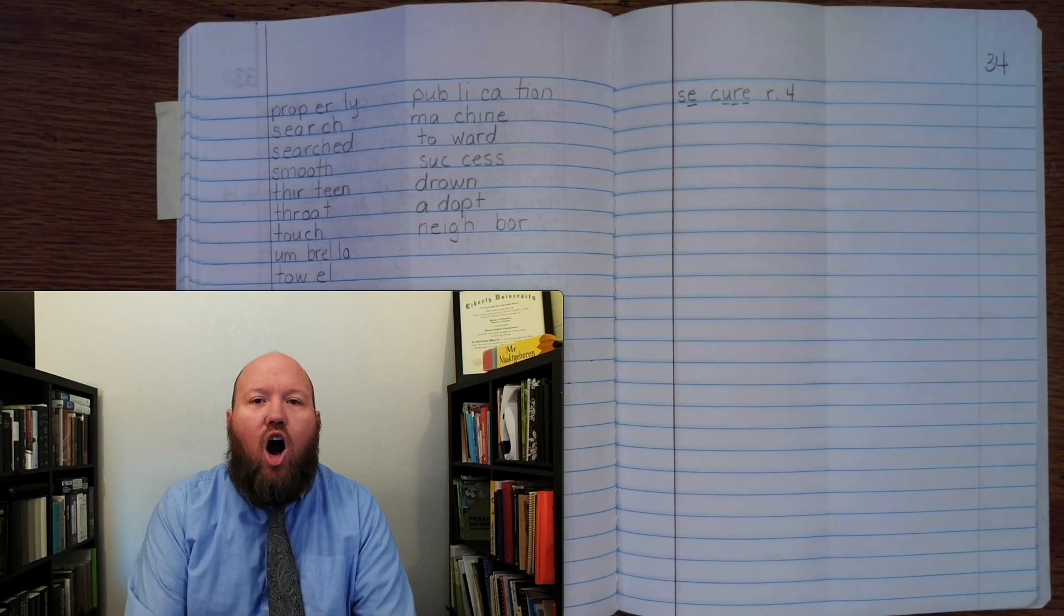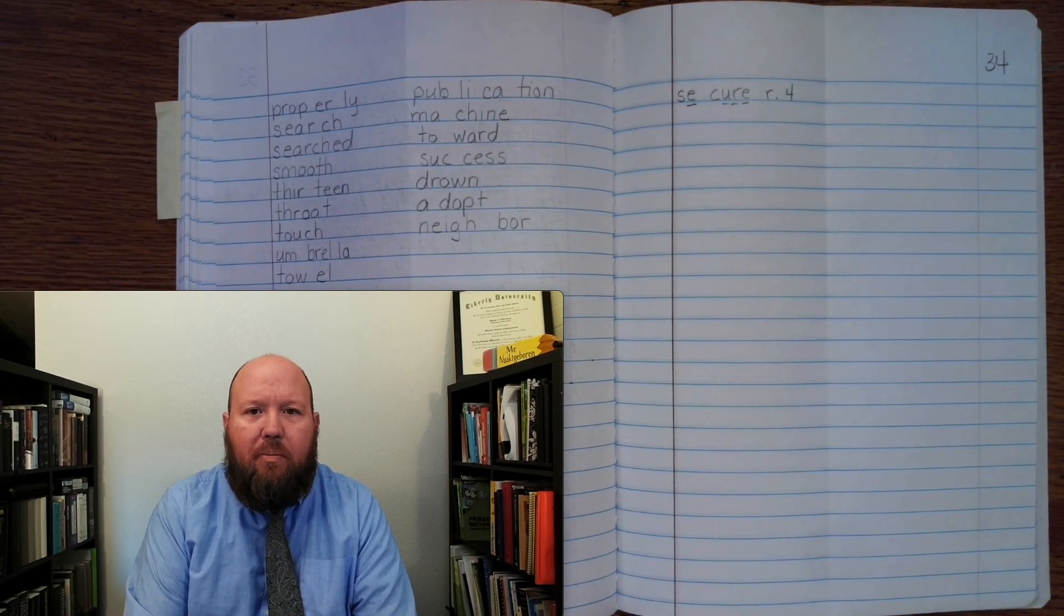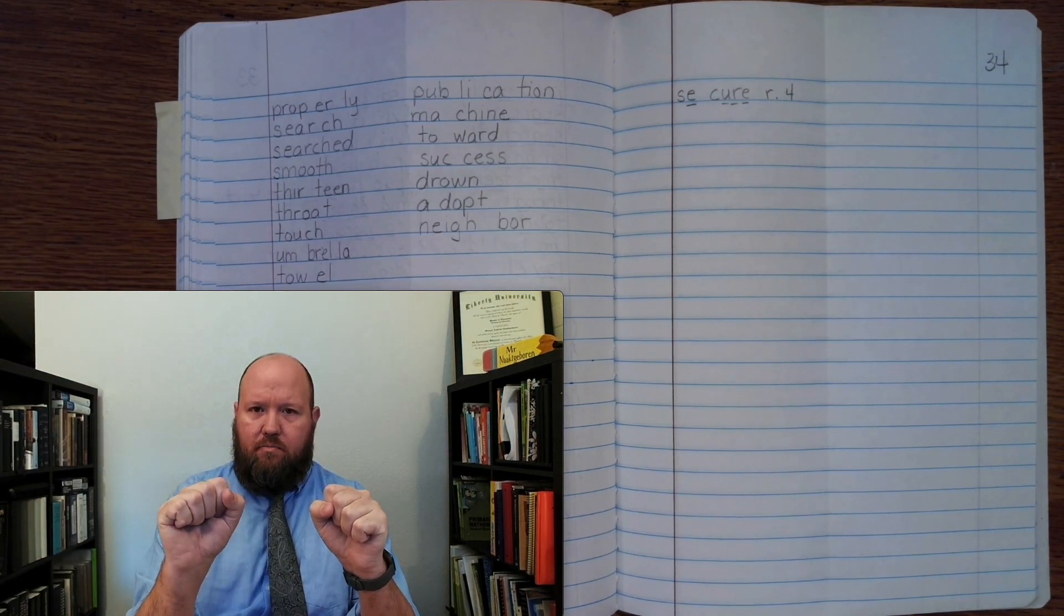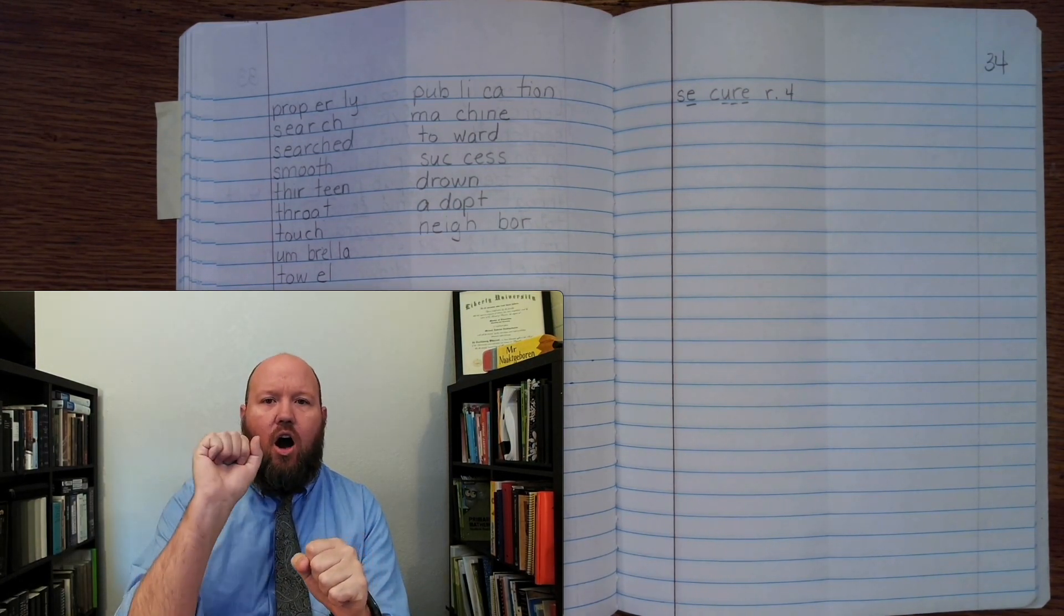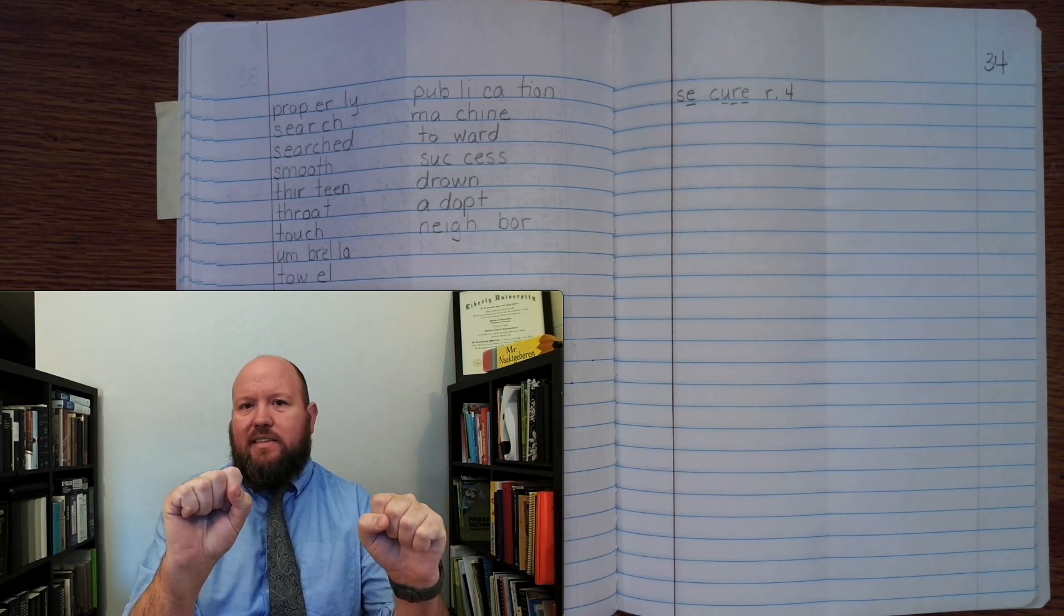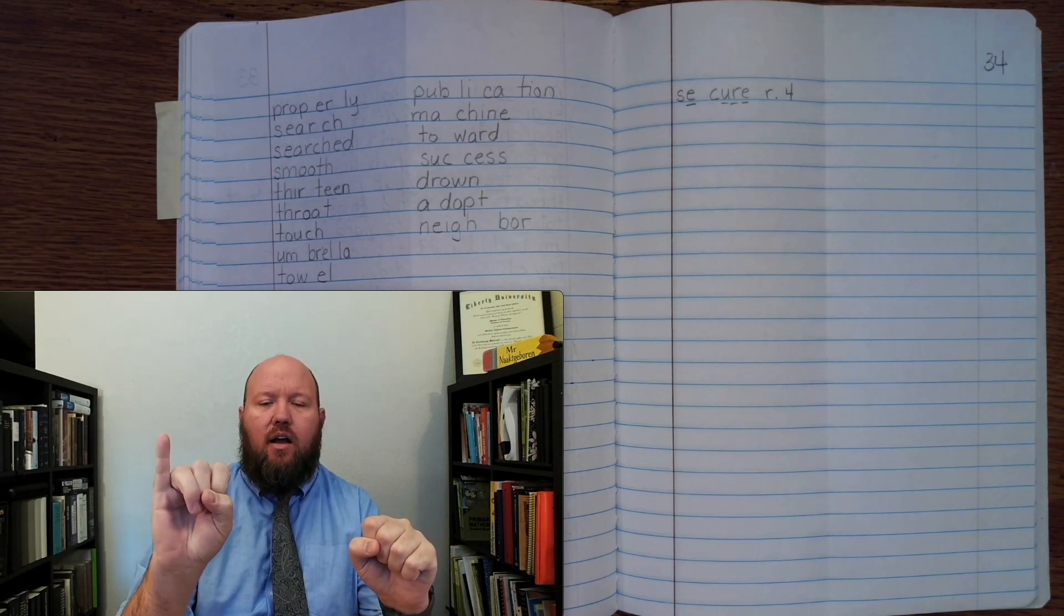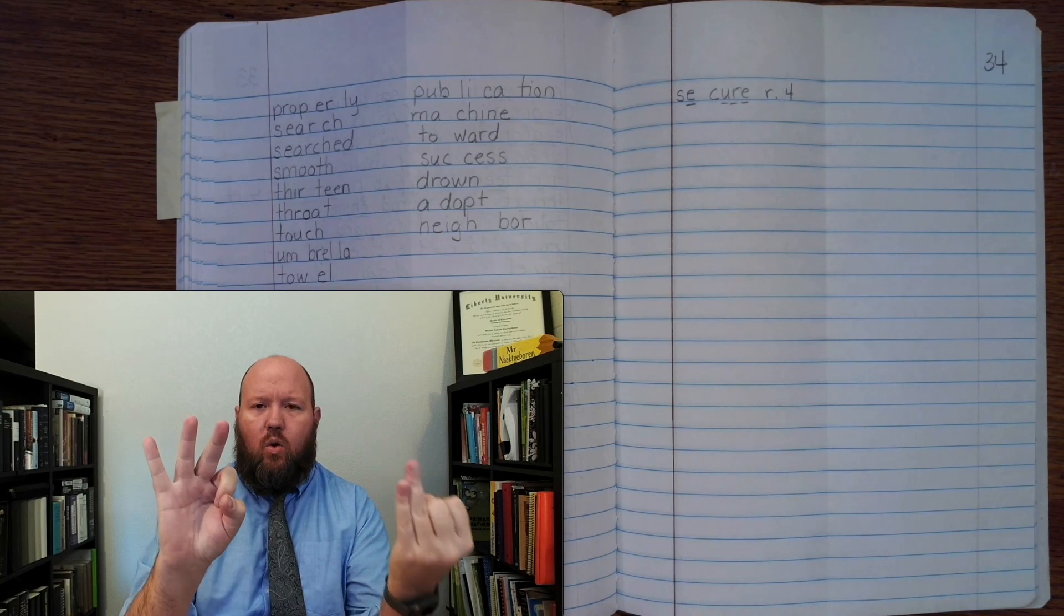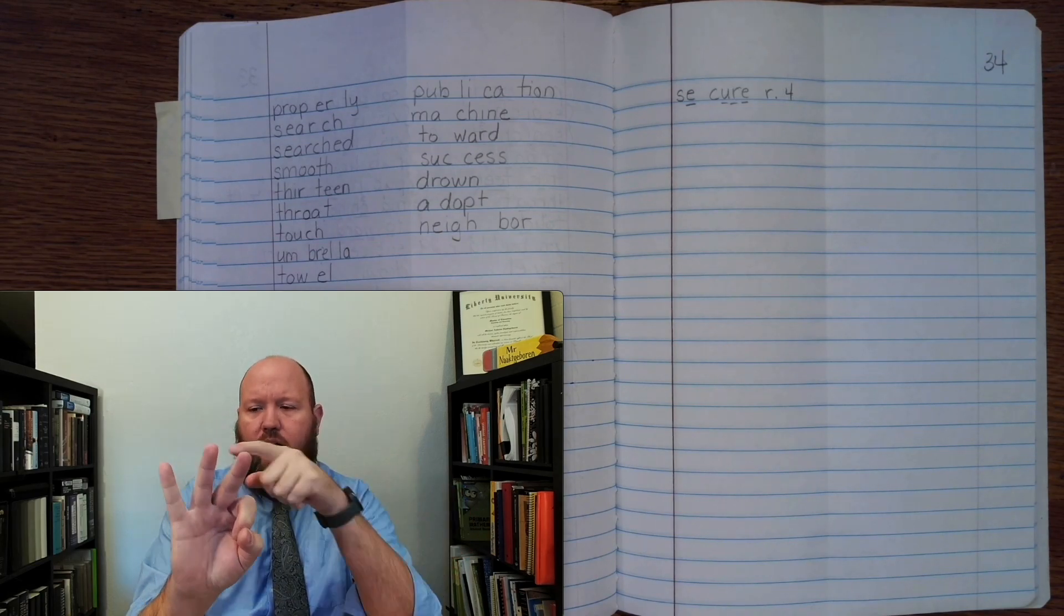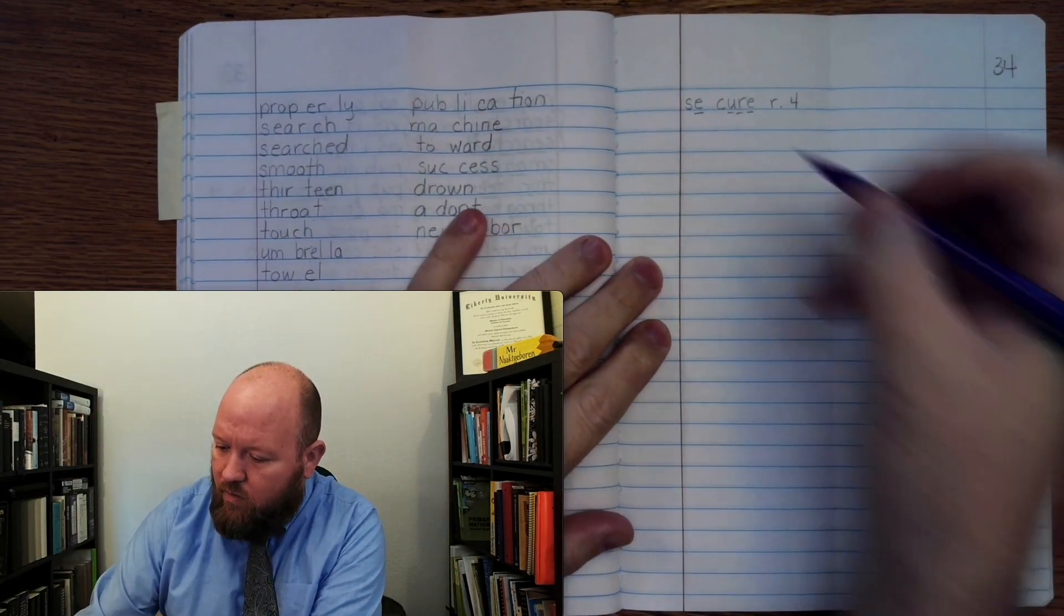The next word is honor. Like, honor your parents. Honor. Base word, honor. On, or. But here we have a silent H. Honor. Okay, so a silent H there. Right?